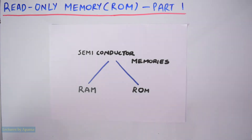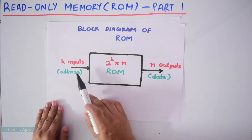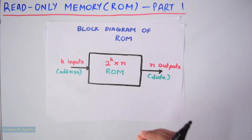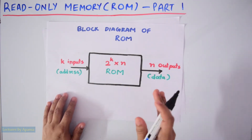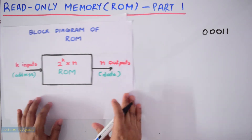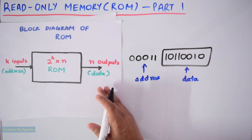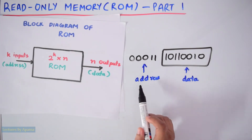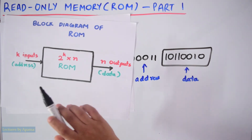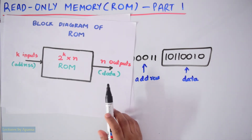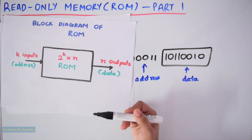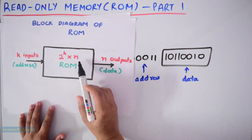The block diagram of ROM is as shown. It has K inputs and N outputs. The input coming to the ROM is the address, which indicates the address from which you need the data. Suppose the address coming to the ROM is 00011 — there will be data present at that address, and you get this data at the output. At the input it is address lines and at the output it is data lines. ROM is not having input data lines because it does not have a write operation.